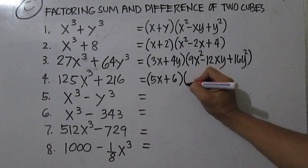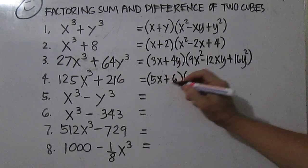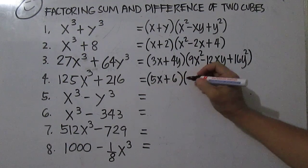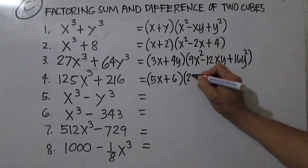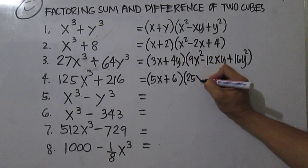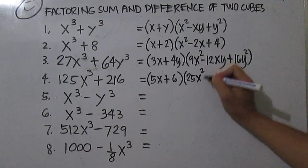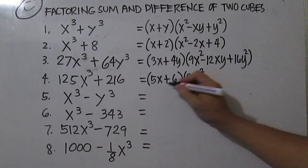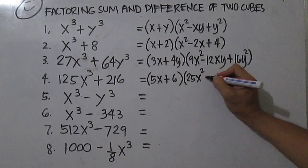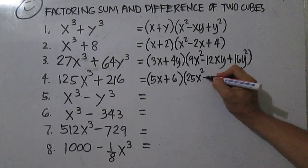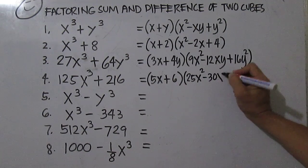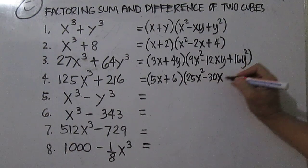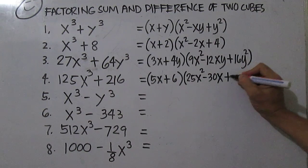From this factor, you square the first term, then write the opposite of the product of the first and second term, and then square the second term.